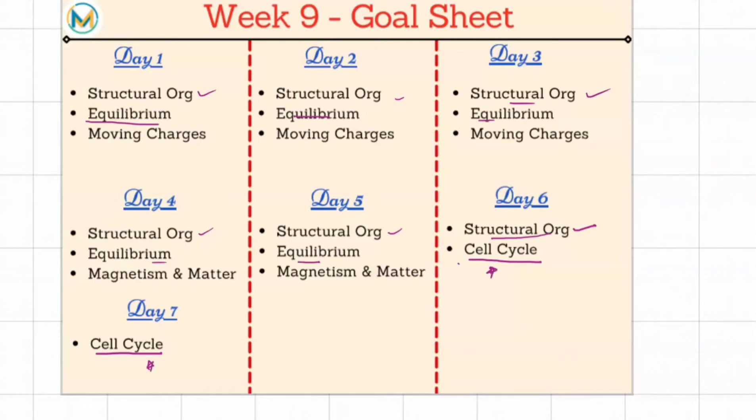Moving charges and magnetism - for moving charges we are allotting three days. For magnetism and matter I'm allotting two days. Again, no physics for day six and for day seven. Day six you can do something backlog from chemistry.